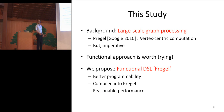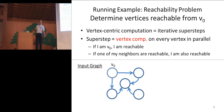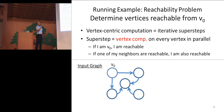I'd like to introduce vertex-centric computation using a quite small example. It's a quite easy computation: a reachability problem. We want to find the vertices that are reachable from the specific vertex V0. In general, vertex-centric computation consists of iterative super steps, and a super step executes vertex computation on every vertex in parallel, so it has massive parallelism.